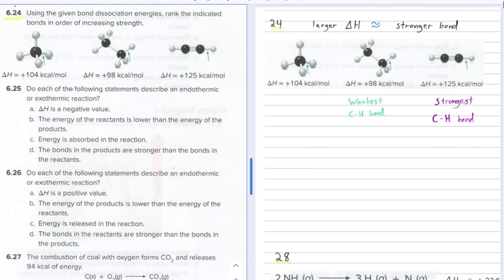Number 24: Using the given bond dissociation energies, rank the indicated bonds in order of increasing strength. So here are several molecules. Looks like this is CH4, this is C2H6, and this is C2H2, and the bonds are being indicated with these blue arrows.